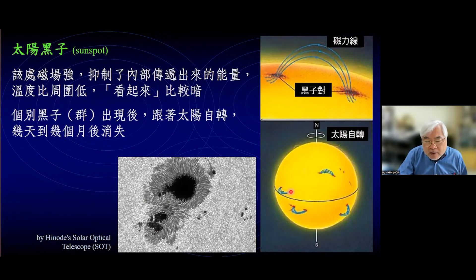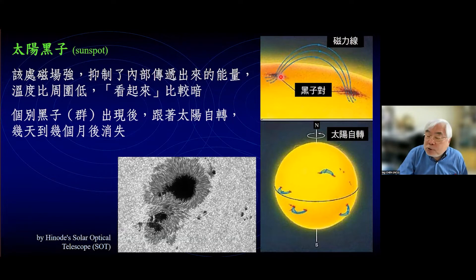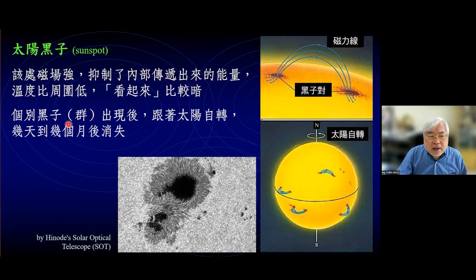我们用望远镜放大太阳表面来看，就会看到太阳表面有一些黑子。这些黑子会随着太阳自转飘到不同的位置。黑子是太阳表面的磁场冒出来，南北两极有磁场，这些磁场缠绕的时候，某些区域磁力线比较多，磁场比较强，磁场强的地方气体不需要那么热就能达到平衡，所以它看起来就比较暗。